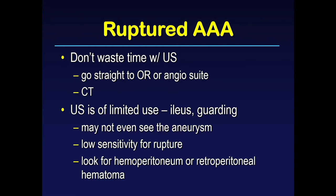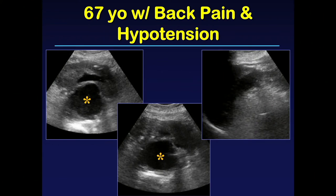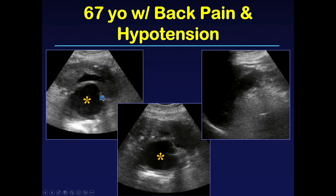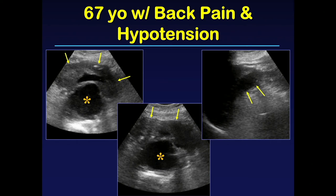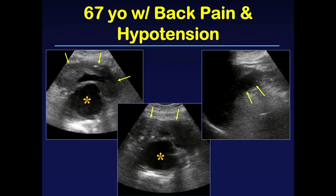What you are reduced to doing is looking for secondary signs of rupture, namely hemoperitoneum or retroperitoneal hemorrhage. Here is an example where we could actually make the diagnosis in a patient presenting with back pain and hypotension. You can see the abdominal aortic aneurysm, on top of which is a heterogeneous crescent-shaped clot, and some complex fluid in the region of the splenic hilum consistent with hemoperitoneum. We don't see this very often, as patients typically go directly to the operating room or angio suite.